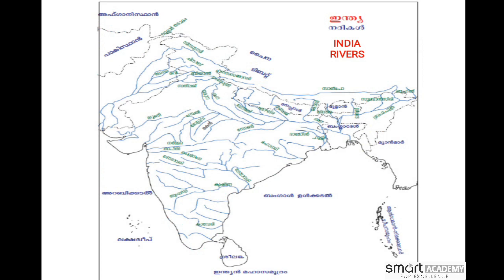The major Himalayan rivers include: Godavari, Narmada, Luni, Chambal, Jhelum, Mughala, Tirevi, Satluj, Beas, Mahanadi.